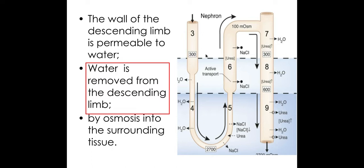Because water is being removed from the descending limb, any ions at the bottom of the loop will be at a high concentration — since with so much water having left, the solution is not diluted. This means there is a high concentration of sodium ions at the base of the loop of Henle, which is why, as mentioned, sodium and chloride ions simply diffuse out from the base of the loop.